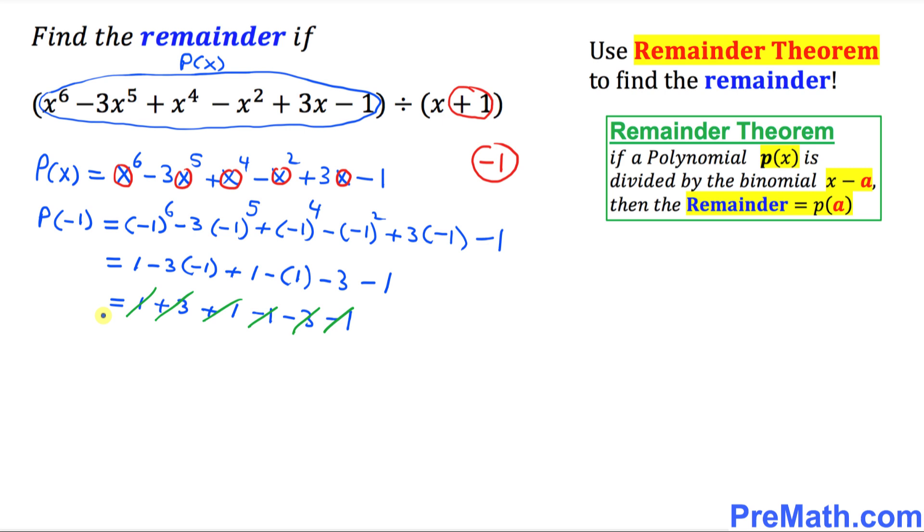As you can see that our p(-1) turns out to be simply zero. So that means zero is our remainder. Thus our remainder turns out to be zero and that is our answer.